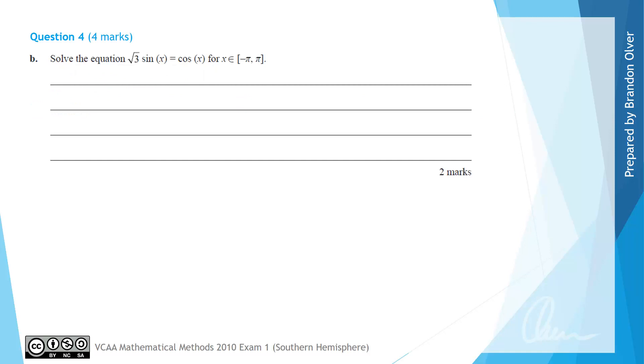For part B of question 4, we're asked to solve the equation root 3 sine of x equals cos of x, for x is an element of negative pi to pi included. So because this equation has sine and cosine in it, we're going to divide both sides of the equation by cos of x, so that we have an equation just involving one trig function, and that will turn into tan of x, because we know the ratio of sine on cos is the definition of tan.